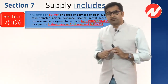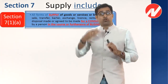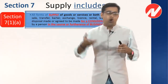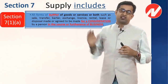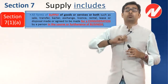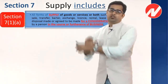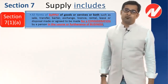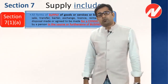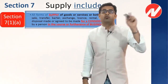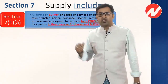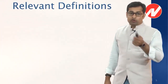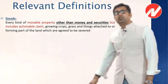Supply includes all forms of supply of goods — so the definition of goods becomes very important. The goods definition under GST is almost the same as under the Sale of Goods Act. It says: every kind of movable property other than money and securities. So neither money nor securities will be considered as goods.